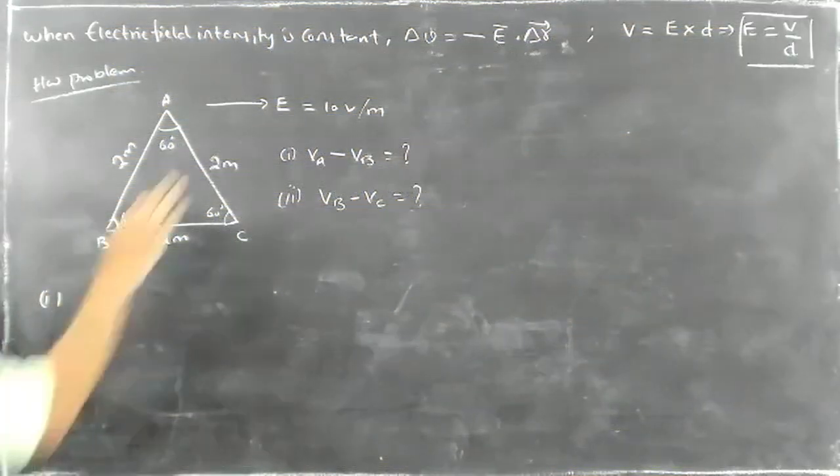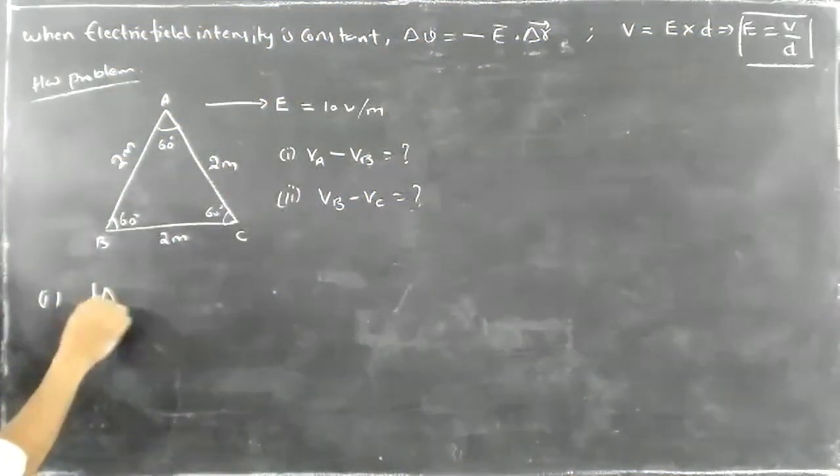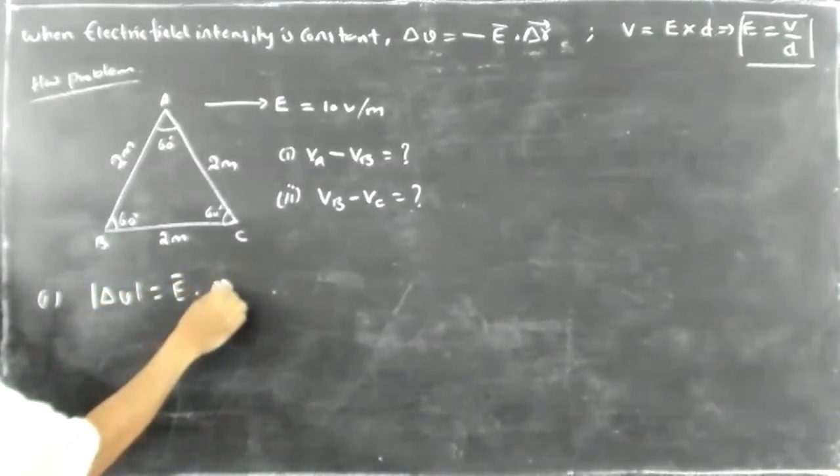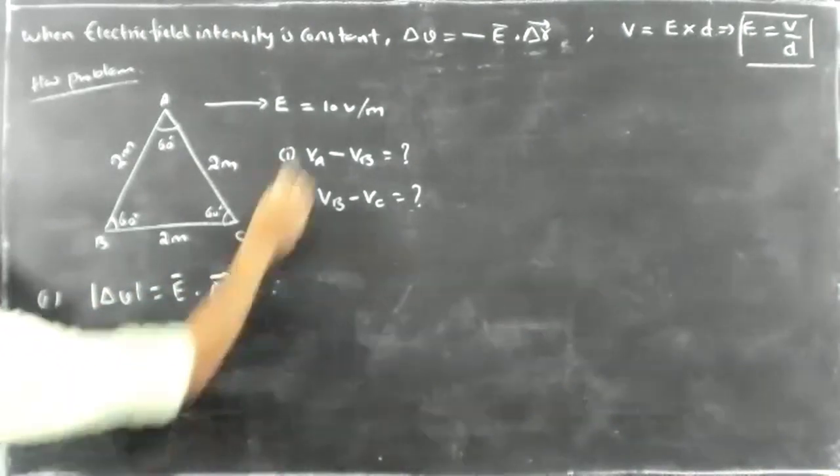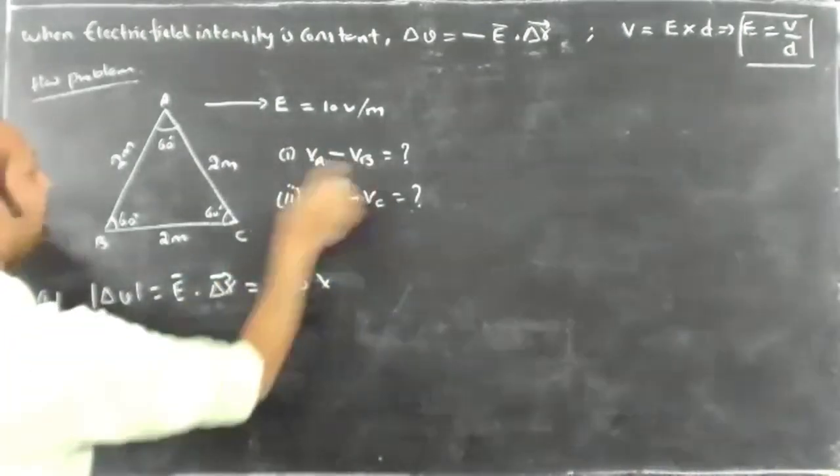So, we will take the magnitude. Delta V is equal to E bar dot delta R. Now what is E here? 10. And what is A and B color? 10.